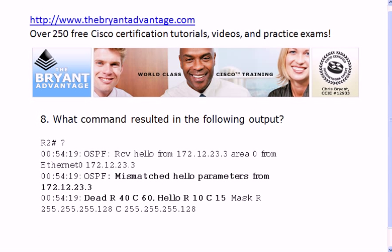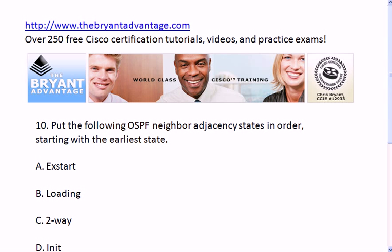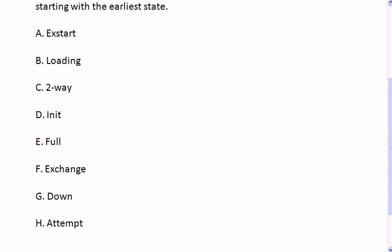Question eight: what command resulted in that output? Remember, if you see output like this on an exam or in a lab while running debugs and show commands, don't panic — look through it for clues. Question nine: what command resulted in that output? This is a common OSPF command; briefly describe the value shown under each category. Question ten: put the following eight OSPF neighbor adjacency states in order, starting with the earliest.